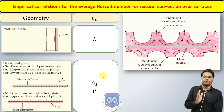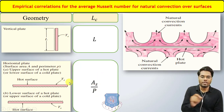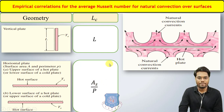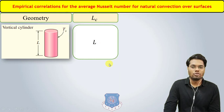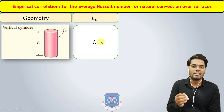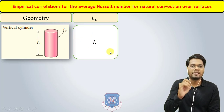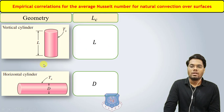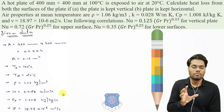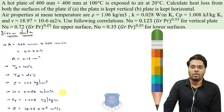If the orientation of the plate is horizontal, then the characteristic length should be its surface area divided by its perimeter. For a vertical cylinder, the same logic as a vertical plate applies — the characteristic length is capital L or its height. For a horizontal cylinder, the characteristic dimension is its diameter. These are the geometries used in free convection numericals.